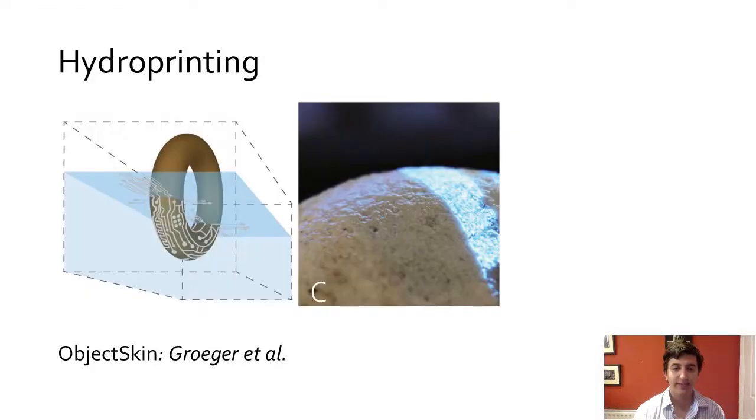In ObjectSkin, Groger et al. introduced hydro printing for adding interactivity to pre-existing irregularly shaped objects. Hydro printing is the process of suspending material on the surface of a fluid and dipping in an object to create a coating. This work creates electrodes on irregular surfaces and demonstrates some layering of electroluminescent paint.